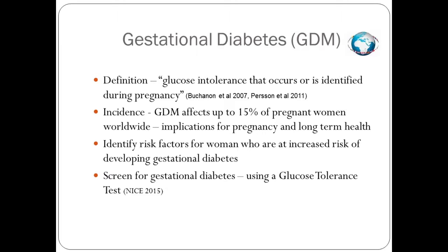In your local trust you will be using different risk factors to screen for gestational diabetes, but some examples include a raised BMI above 30, a previous macrosomic baby weighing 4.5 kilograms or more, a previous history of gestational diabetes, a family history of diabetes in a first-degree relative, or a family origin with a high prevalence of diabetes, including those who are South Asian, Black Caribbean, and Middle Eastern. When reviewing all those risk factors, obesity is considered to be the main contributory factor for gestational diabetes.